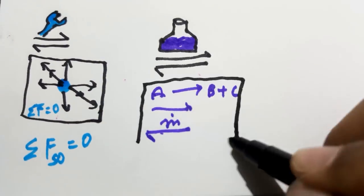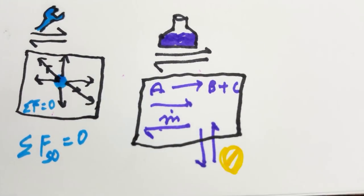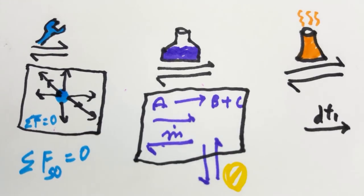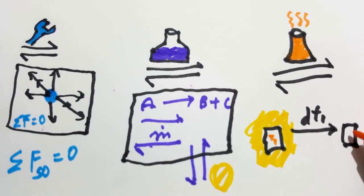Second, chemical equilibrium which requires no chemical reaction or matter transfer from one part of the system to another. And last, thermal equilibrium which requires no spontaneous change in the property of the system if it is separated from the surroundings.